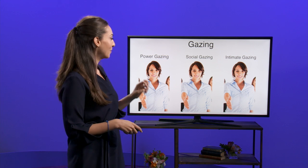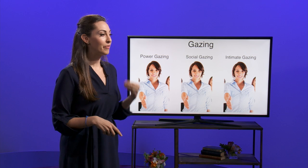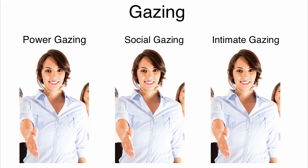I want to talk briefly before we go into the next trivia question about the three different kinds of gazing. You would think that when we look at someone, we actually look at them the same way — we look at their eyes back and forth. Actually, our eyes make a pattern on people's faces. Let me show you.